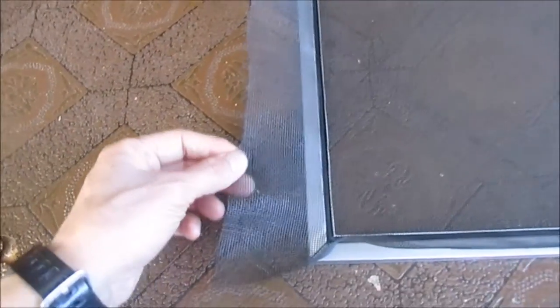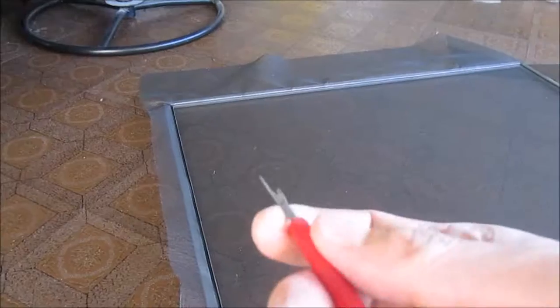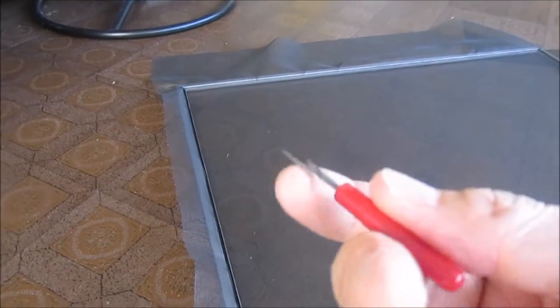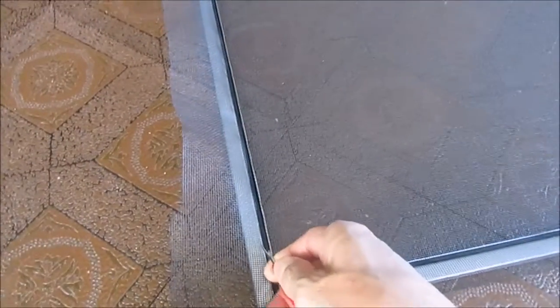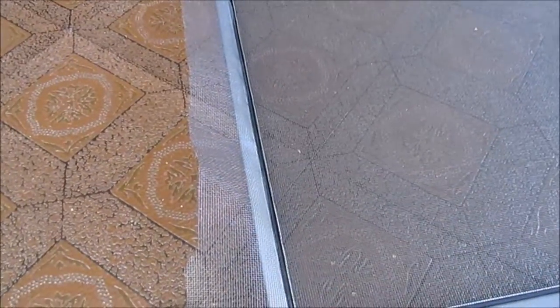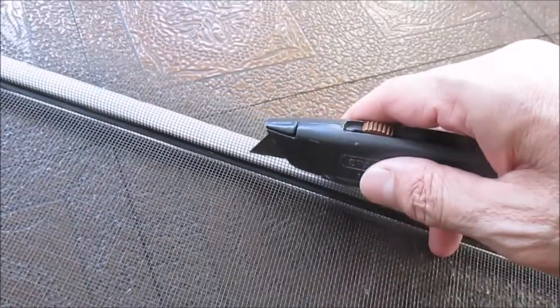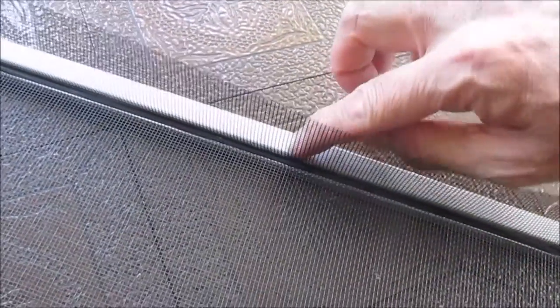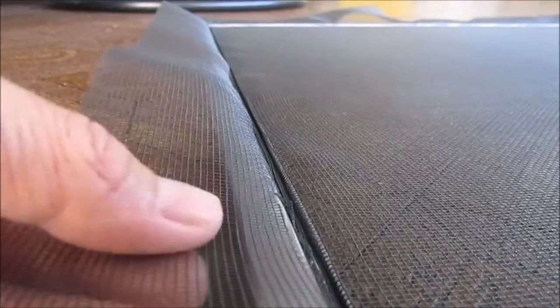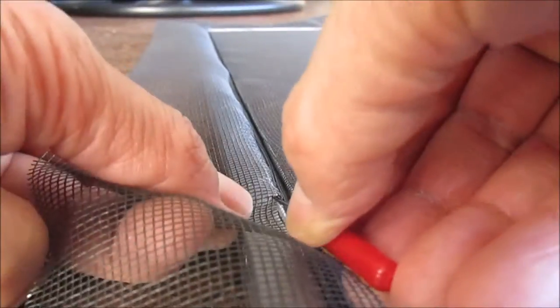My final tip is on removing the excess screen once you have it all splined up. I use a seam ripper. I find that this works really well for zipping right along the edge and removing the excess screen. And unlike using a utility blade, as if I were to do this, I won't scratch the frame. Here's a short demonstration of using a seam ripper and removing the excess screen from a frame.